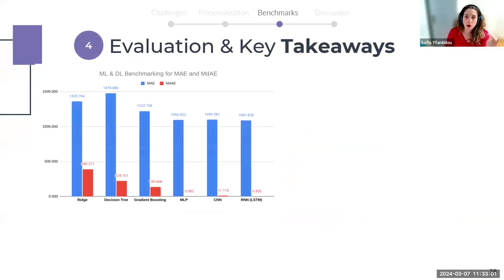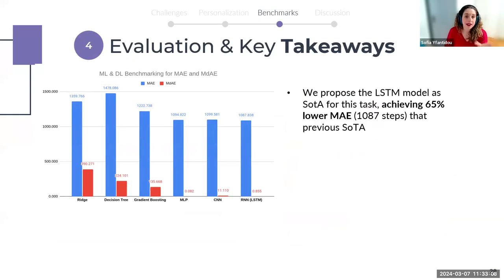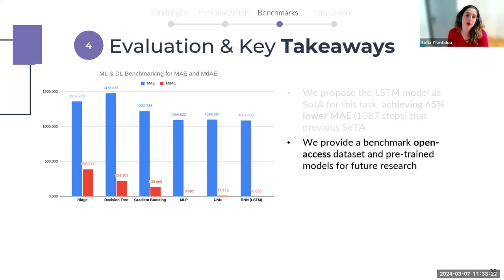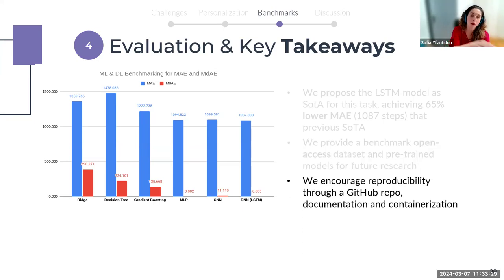In terms of evaluation, we compare both the mean and the median absolute error in terms of steps for each model. The LSTM model achieved a mean absolute error of around 1,000 steps, which is 65% lower than previous state-of-the-art models trained on smaller datasets. To encourage reproducibility, we open our benchmark data and models on GitHub, thoroughly document our code, and utilize containerization for cross-platform compatibility.